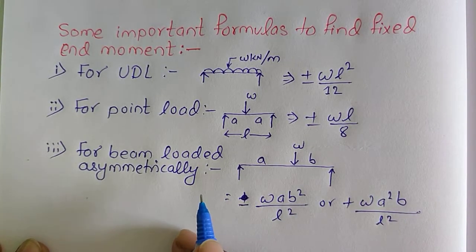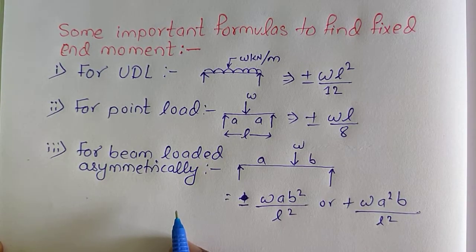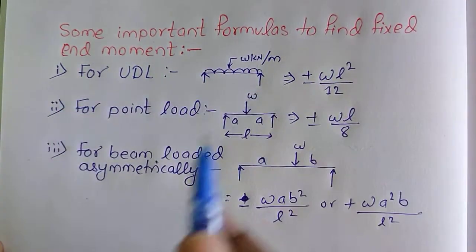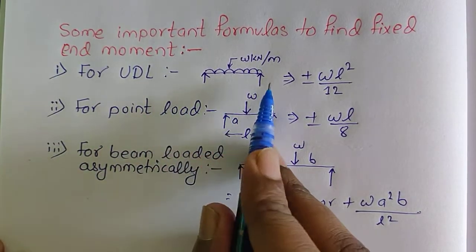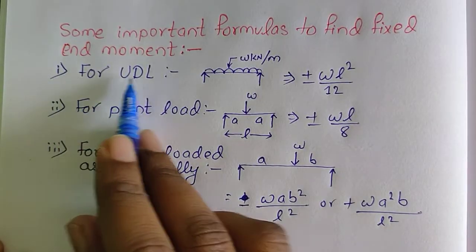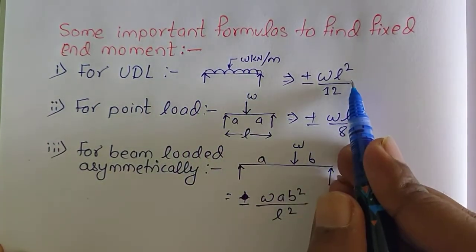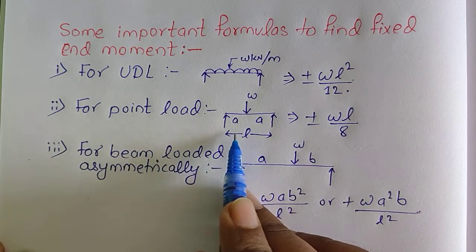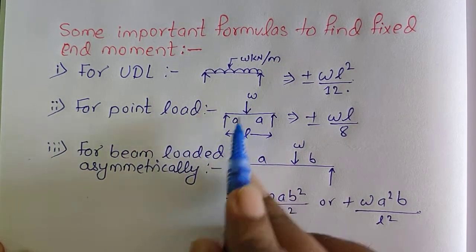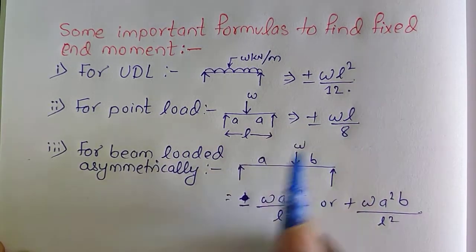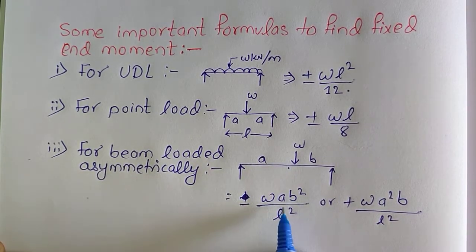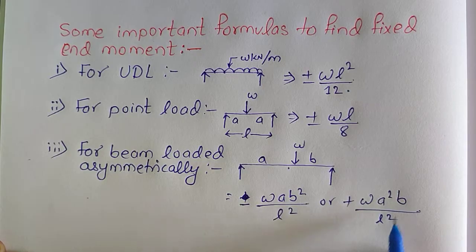In this numerical our first step is to find the fixed-end moments at each support. Here are the formulas to be used under different loading conditions. If the span is loaded with UDL, we use the formula wL²/12. If the span has a point load W at mid span, we use ±WL/8. For asymmetrical loading with the point load away from center, we use -Wab²/L² and +Wa²b/L².